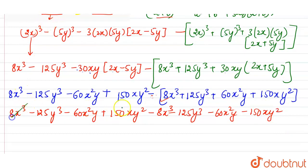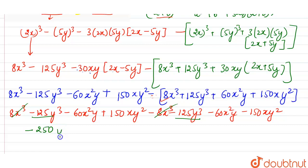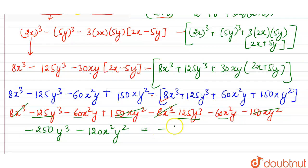Now let's cancel out the terms. Positive 8x cube and negative 8x cube cancel. Negative 125y cube and negative 125y cube give minus 250y cube. Minus 60x squared y and minus 60x squared y give minus 120x squared y. Positive 150xy squared and negative 150xy squared cancel. Taking minus common, the final answer is minus(250y cube plus 120x squared y).